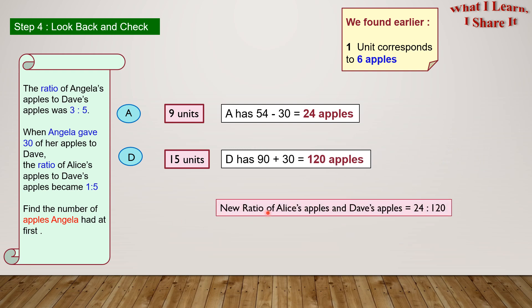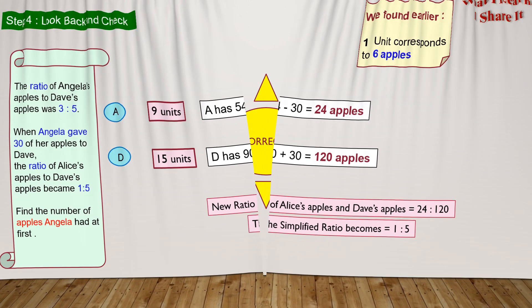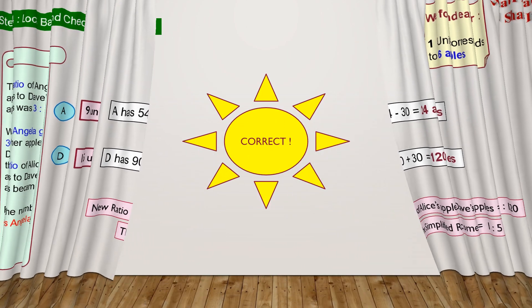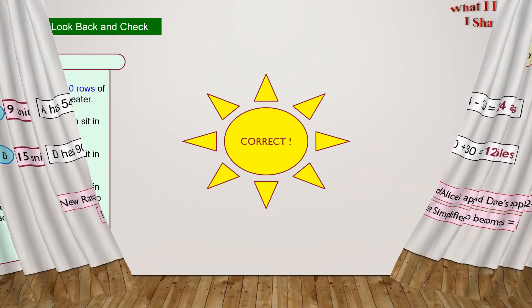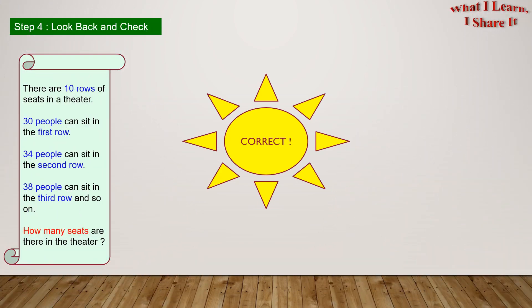The new ratio of Alice's apples and Dave's apples equals 24 is to 120, and the simplified ratio becomes 1 is to 5. So this means our answer is correct! Yay! We solved the problem!